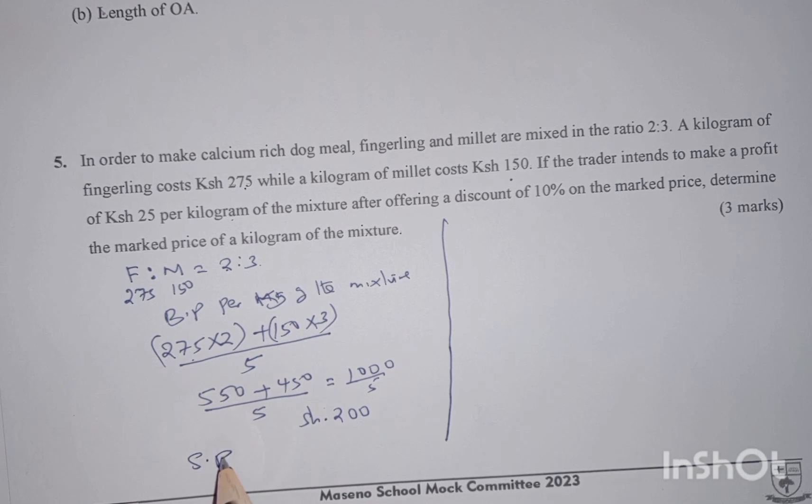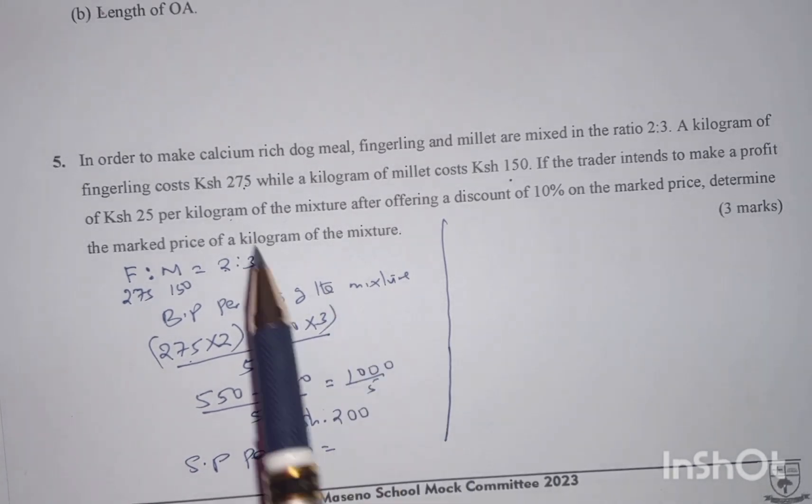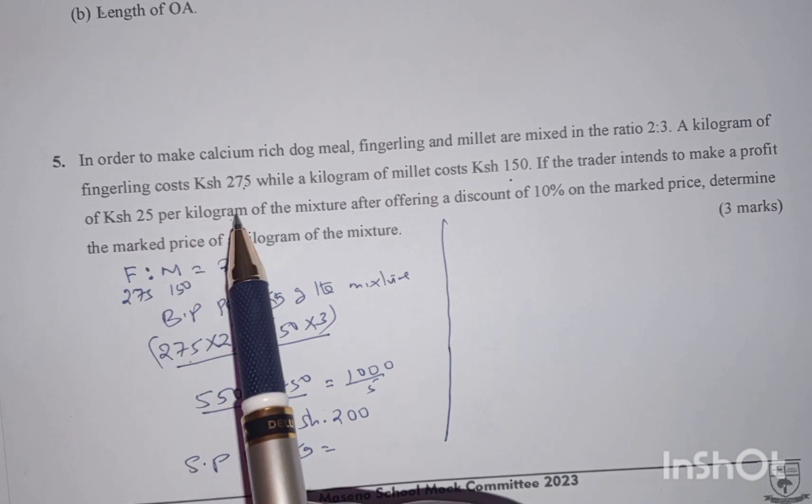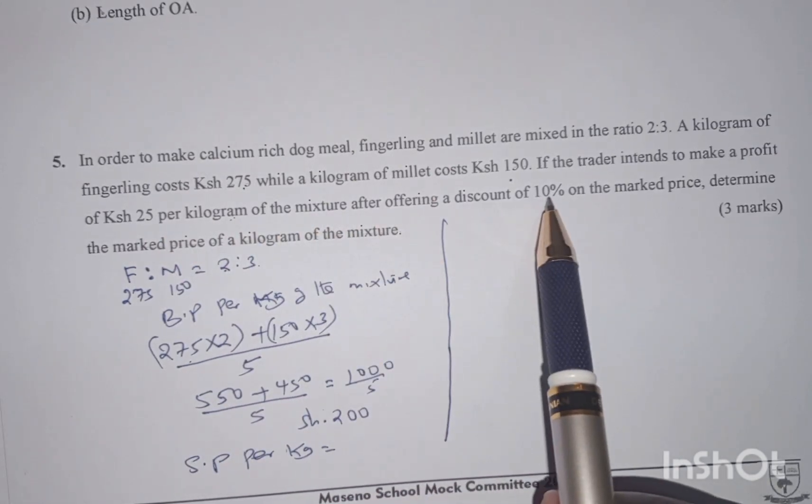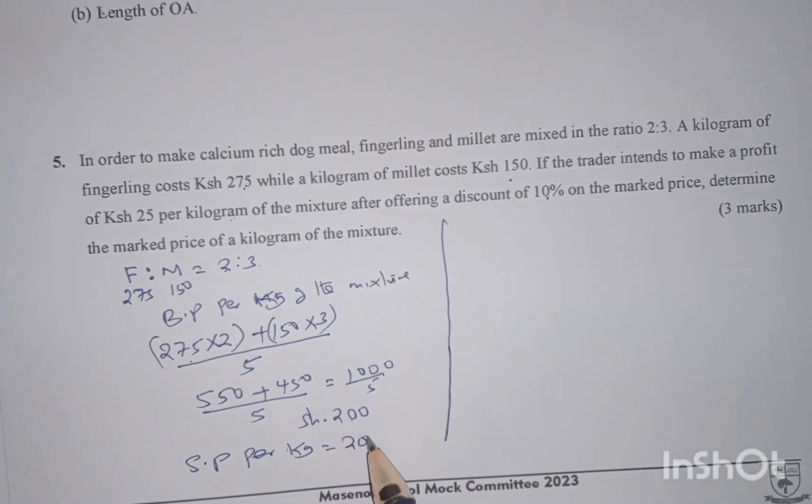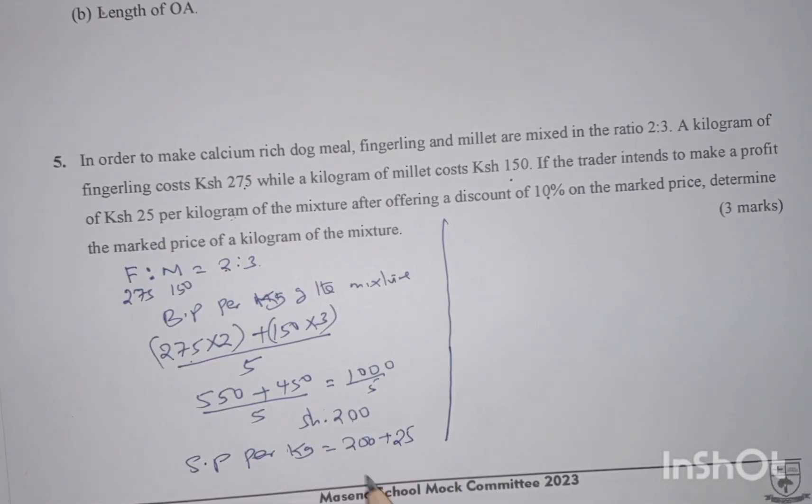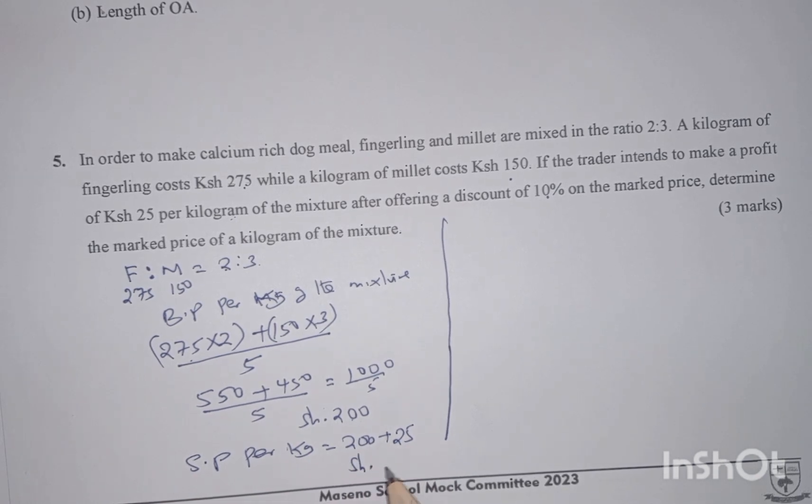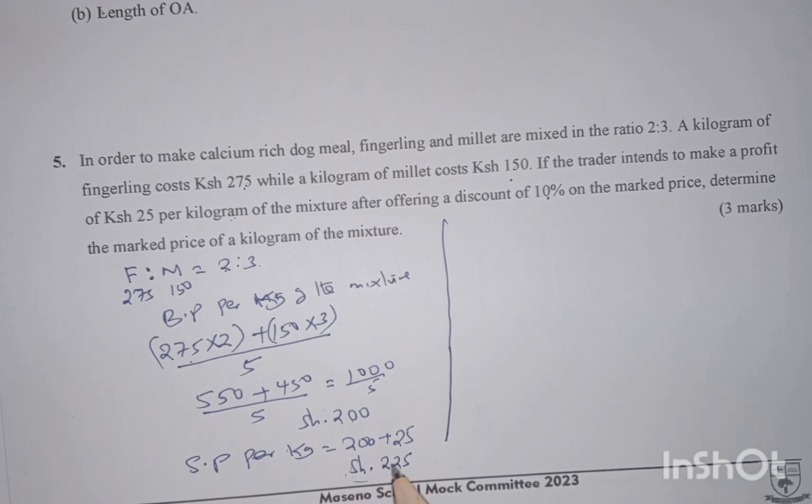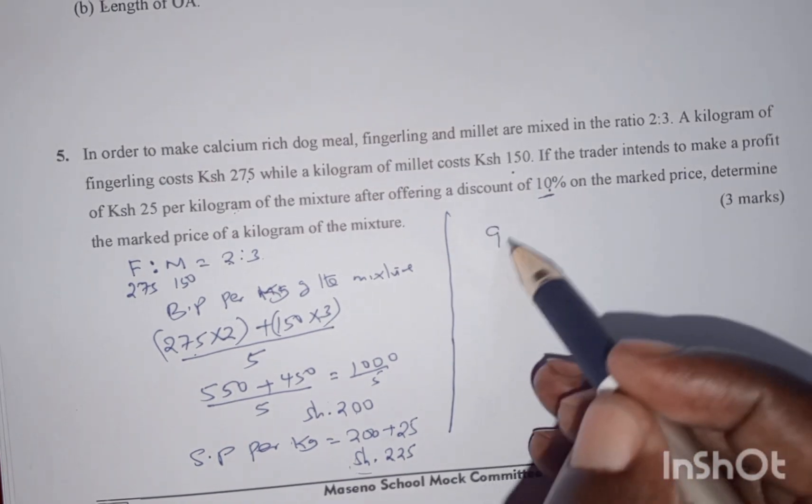We can now find the selling price per kg of the mixture. We are told that the trader intends to make a profit of 25 per kg of the mixture after offering a discount of 10%. To find the selling price we take the buying price which is 200, we add the profit that the trader intends to make of 25, giving us a total of 225. This is the selling price per kg of the mixture after a discount of 10%.